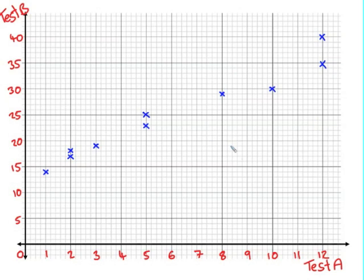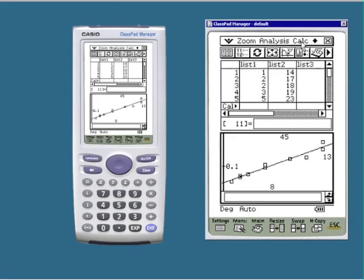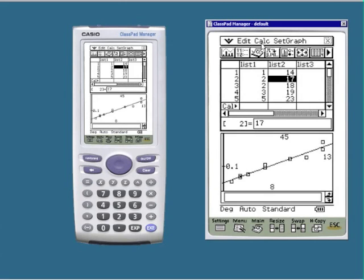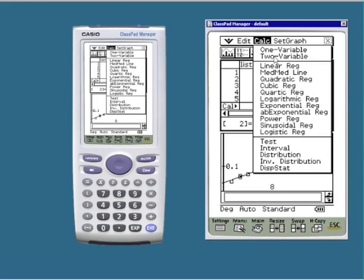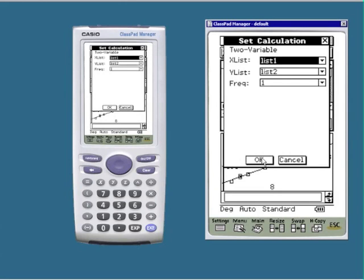Now, having done all of that work, I don't want to now just guess where my linear regression line is going to be drawn on this graph. I'm going to get the calculator to help me a bit more. If we go back to the lists of data and calc two variable, list 1 and list 2, OK.